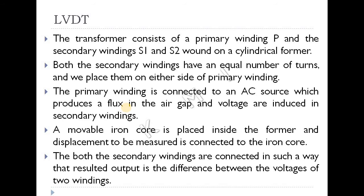The EMF is connected across the two secondary windings. The moveable iron core is placed inside the former, and the displacement to be measured is connected to the iron core. Both secondary windings are connected such that the output is the difference between the voltages of the two windings.